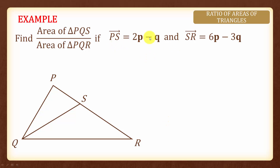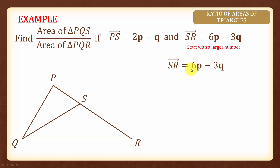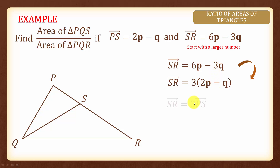Let's look at an example. Given the two vectors, we are asked to find the area of triangle PQS over area of triangle PQR. Let's find the ratio of PS over SR. Starting with the larger number, SR equals 6P minus 3Q. We can multiply PS by 3, since 3 times 2P is 6P and 3 times negative Q is negative 3Q. Hence, vector SR equals 3 times vector PS, so the ratio of SR to PS is 3 to 1.